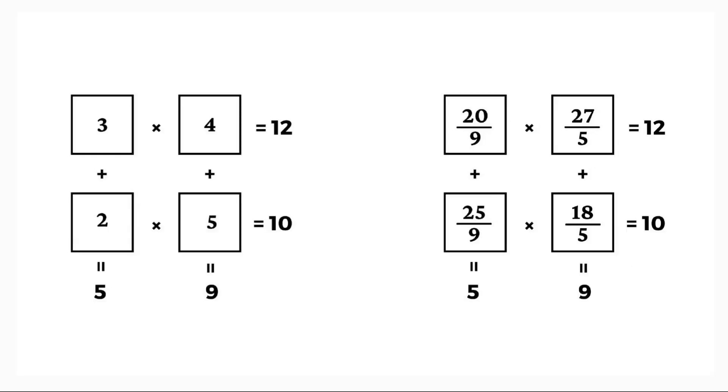Or simply 3, 4, 2 and 5 is the first set and 20 over 9, 27 over 5, 25 over 9, 18 over 5 is the second set.